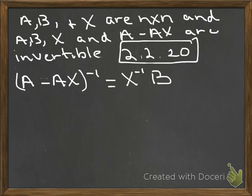We know that A, B, X, and A minus AX are invertible, so I can take the inverse of both sides of this expression and I get A minus AX on the left is equal to, and then inverting the product reverses the order, so that would be B^(-1) times X.